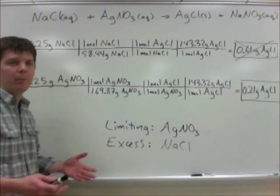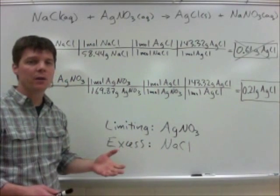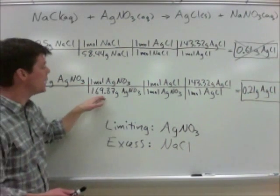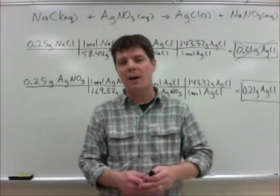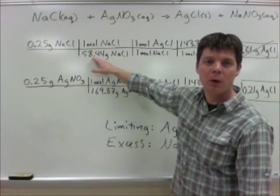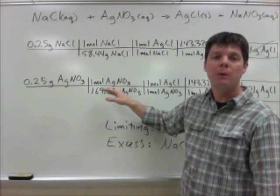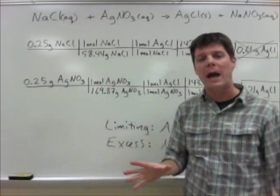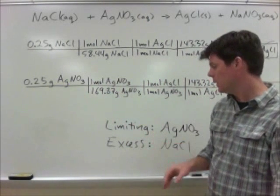We still want to know what the balanced reaction is for the process we're looking at. I'd also want to consider the molar masses of my two different reactants: 58.44 grams for sodium chloride and 169.87 grams for silver nitrate. Because we have the exact same starting mass of both, we can say that 0.25 divided by 58.44 is going to produce a larger number than 0.25 divided by 169.87. Because I will have a smaller number of moles of silver nitrate, and because silver nitrate and sodium chloride react in a one-to-one ratio, at that point I would know that the silver nitrate would be my limiting reactant.